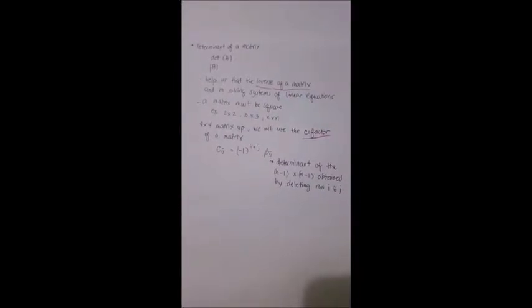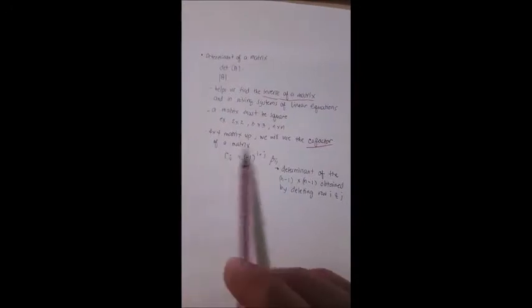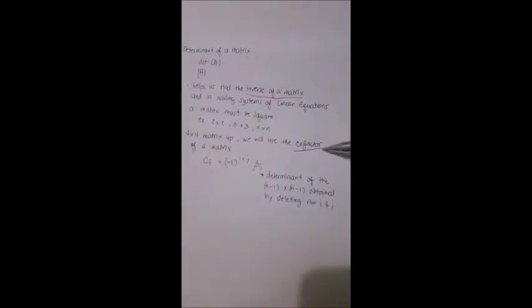So a matrix must be square in order for us to compute the determinant of the matrix. Example, we have 2 by 2, 3 by 3, or n by n matrix. But for a 4 by 4 matrix and up, we will use the cofactor of a matrix.